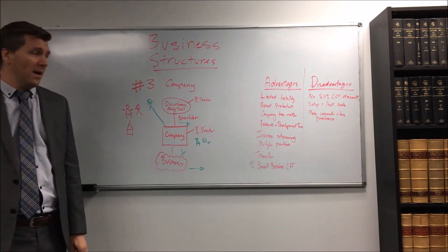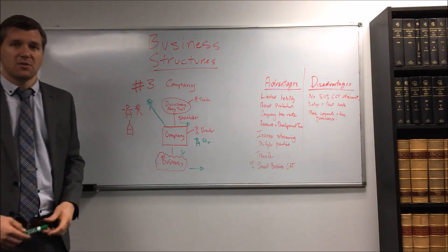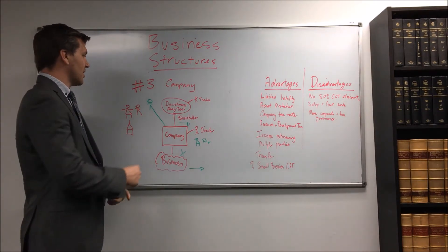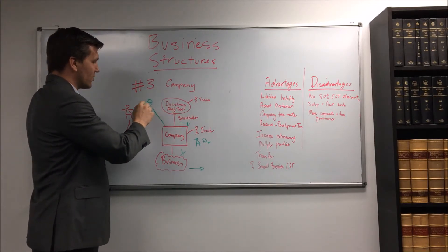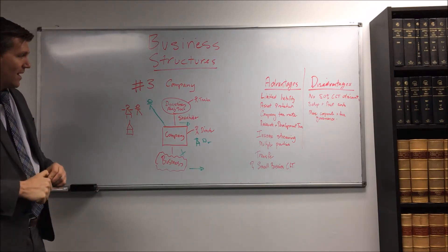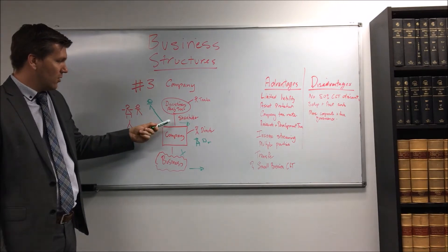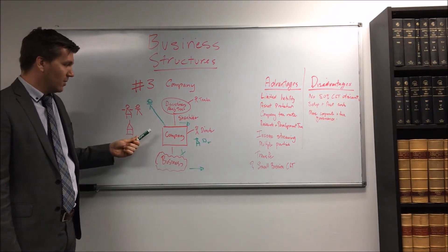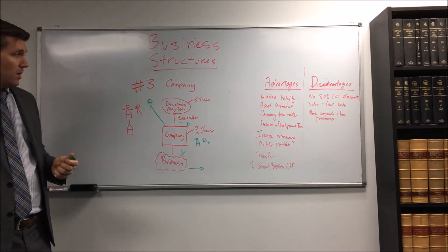Now you can get the small business CGT concessions. There is, you need to pay a bit more attention to how you get them. You're only going to be owning it through the discretionary trust here so you're going to have to pay attention to where the distributions have come out. If you're going to have to look for significant individuals who owns what percentages, particularly we have multiple people, it's just something you need to pay attention to and tick all of the boxes.